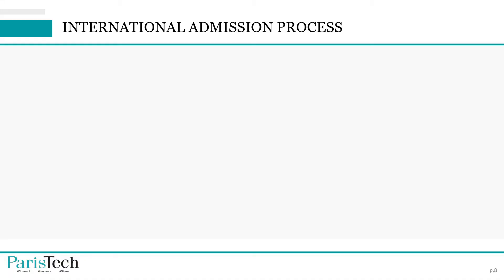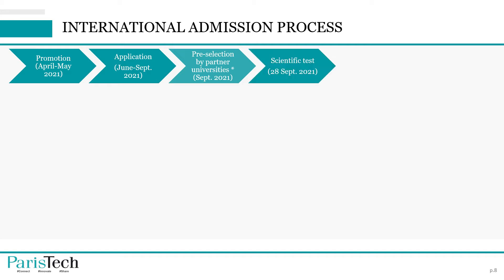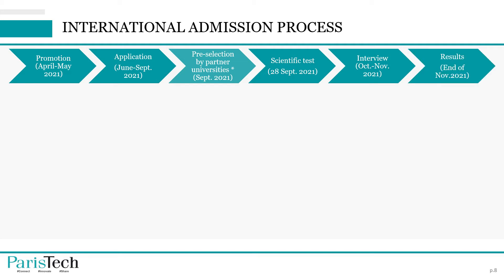The calendar for the PariTech International Admission Program is as follows: promotion from April to May, then applications from June to September. For students from Argentina, Brazil, Colombia, and Russia, there is a pre-selection by the partner university. Then at the end of September, you will take a scientific test. Interviews run from October to November, and the final results will be available by the end of November.